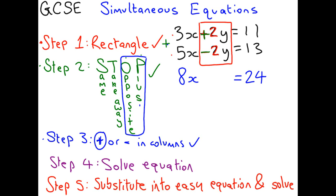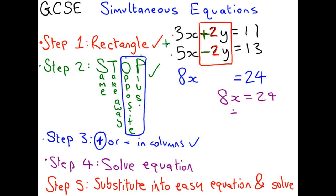Step 4 says: whatever you get from step 3 — we've got 8x equals 24 — we have to solve the equation. If you've got 8x equals 24, you're going to divide by 8 on both sides and get x equals 3. You can put a little square around that because that's one of your answers, and that's step 4 done.